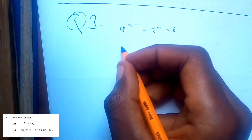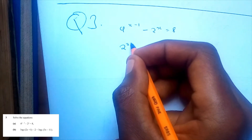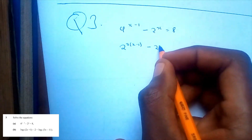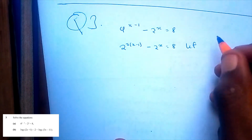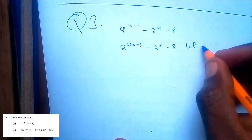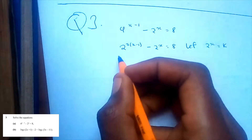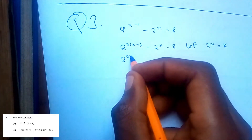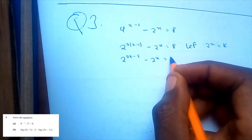We write this in base 2. That would be 2 to the power (2x minus 1) minus 2^x is equal to 8. Then we let 2 to the power x be equal to k. First of all, let me simplify this into 2^(2x minus 2) minus 2^x is equal to 8.